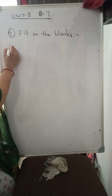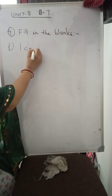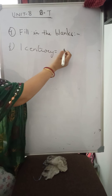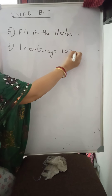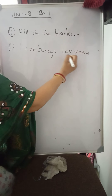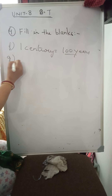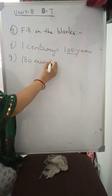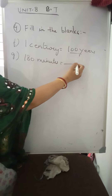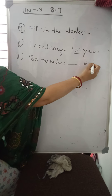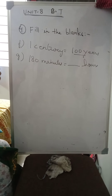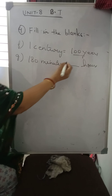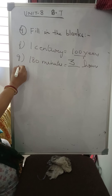Now F: 180 minutes is equal to how many hours? One hour equals sixty minutes, so 180 minutes means sixty plus sixty plus sixty — it is three hours.